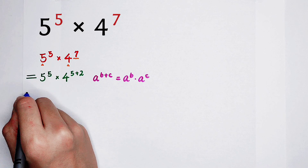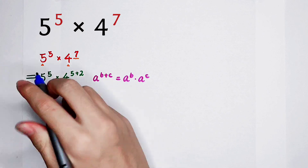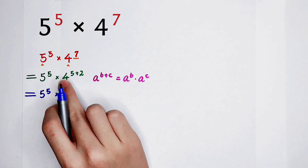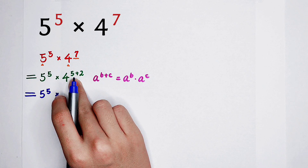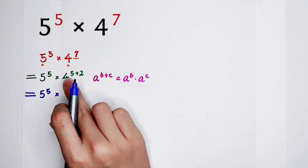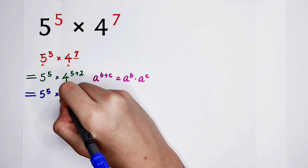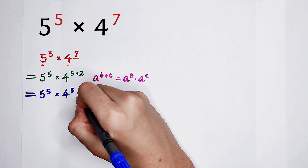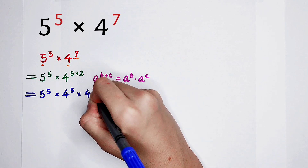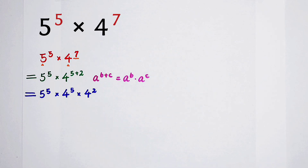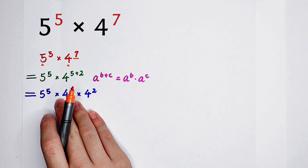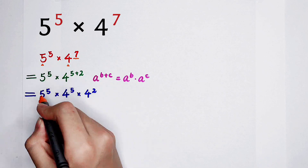So the next step is: 5 to the power 5, still this, and 4 to the power 5 plus 2. Now a is 4, b is 5, c is 2. So it becomes 4 to the power 5, then times 4 to the power 2 — that is 4 squared. Now we have to pay attention: because 5 and 4, these two bases, now have the same exponent, which is 5.